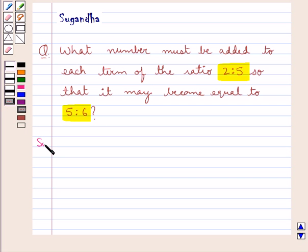Let's proceed with the solution now. We have to find the number that must be added to each term of the ratio 2 is to 5 so that the ratio becomes equal to 5 is to 6.